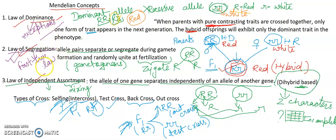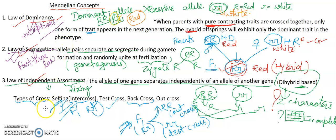Aaj ke video mein hum log ne kya kya padha: law of dominance, law of segregation, law of independent assortment, and the types of cross. Next video mein hum log monohybrid cross ko detail mein padhenge — kya genotype mil raha hai, kya phenotype mil raha hai, kya genotypic ratio hai, kya phenotypic ratio hai. Dihybrid cross hum log total detail mein padhenge apne next video mein. Yeh Mendelian concept bahut hi important hai — genetics se 10 marks ke lagbhag questions aa hi jaate hain, 5 marks ka question aata hi aata hai Section B mein, jo poora Mendel ke law pe hi based hota hai — ya to monohybrid ya to dihybrid cross.